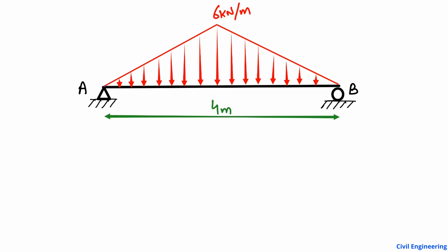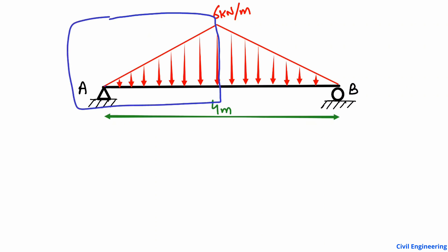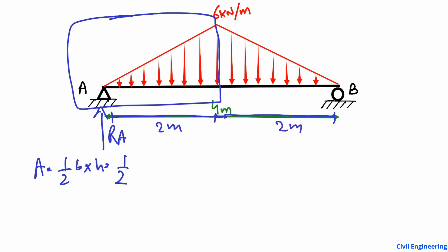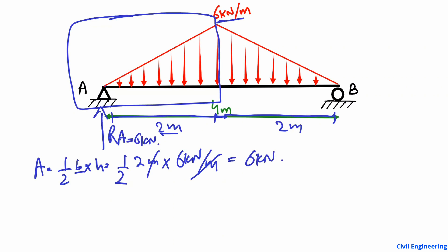Now for the second method: take just the left half-triangle. Its area is half base times height. The total length is 4 meters, so each half is 2 meters. Half times 2 meters times 6 kilonewtons per meter gives 6 kilonewtons. So RA equals 6 kilonewtons.